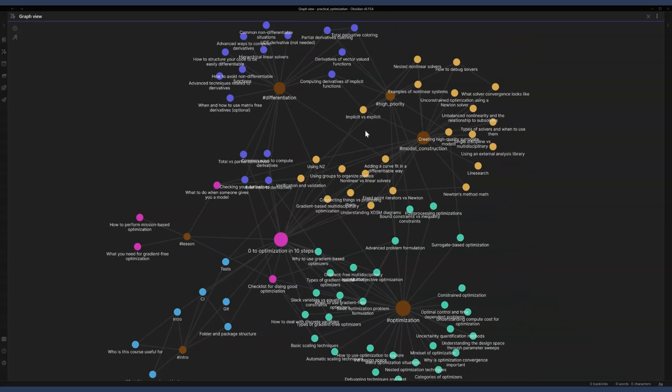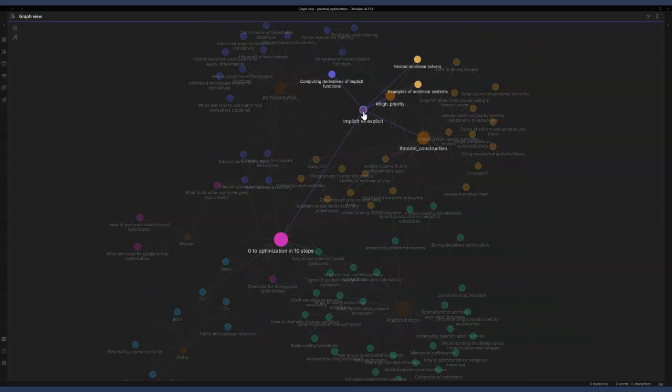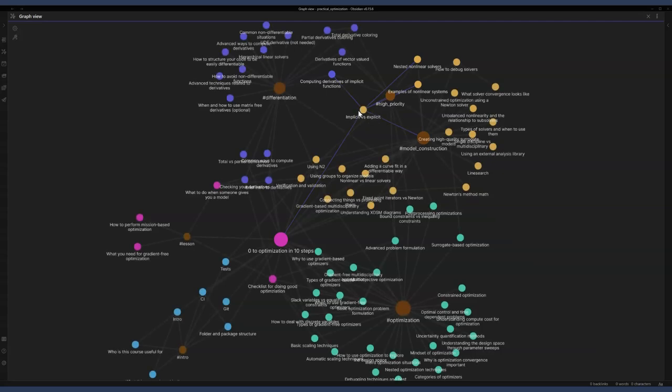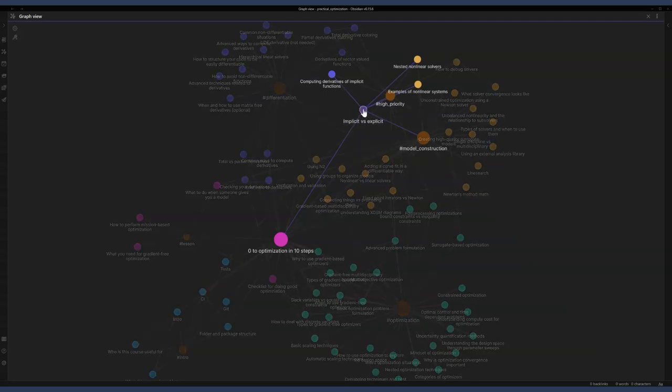I also need to care about nested linear solvers and examples of non-linear systems. This is one way to kind of graphically see how all of these topics are related together and what they mean.